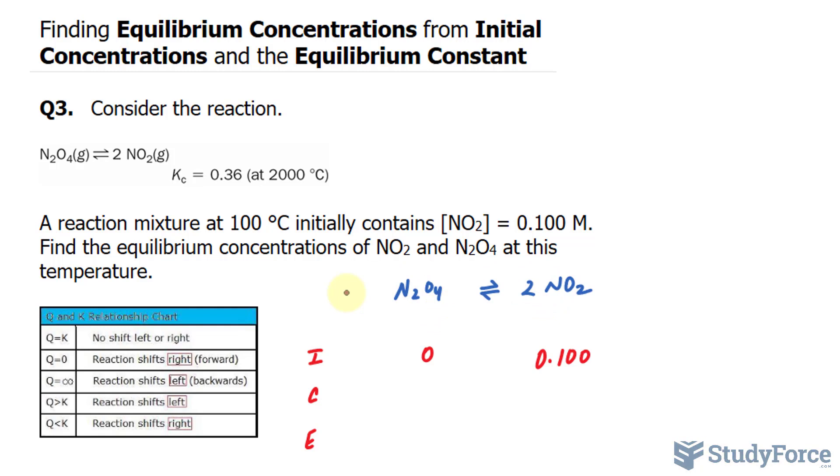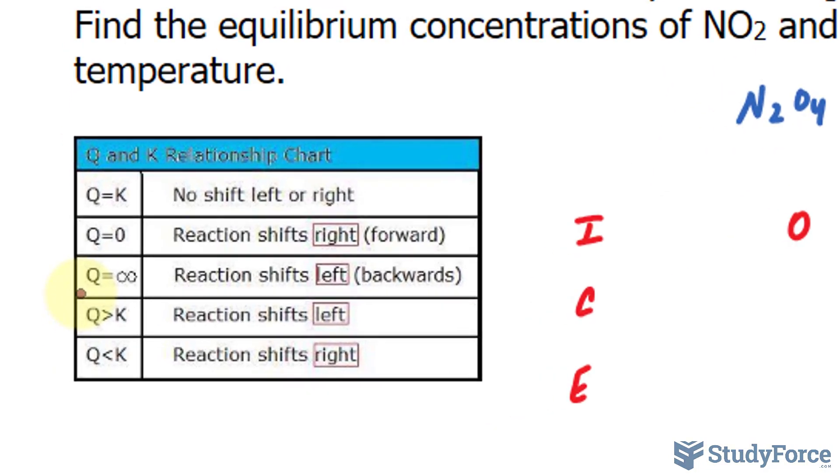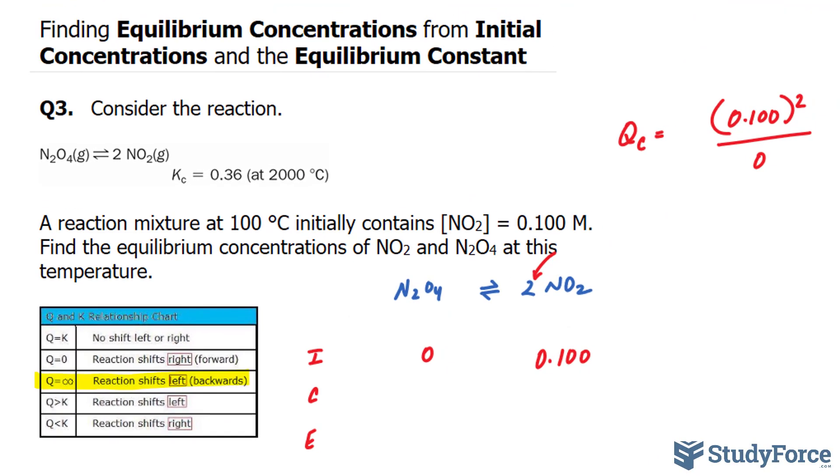Now I want to see which direction this reaction will take place. So I'll try to find the reaction quotient represented by the letter Q. And to find this, you look at the initial concentrations. So the products, the concentration 0.100 raised to the power of 2 because of the coefficient 2, divided by the concentration of N2O4, your reactant. And that's 0. Now when you divide something by 0, you get an error. So we look at this chart and specifically this part tells us what happens. The reaction is going to move backwards. So it's going to shift to the left.